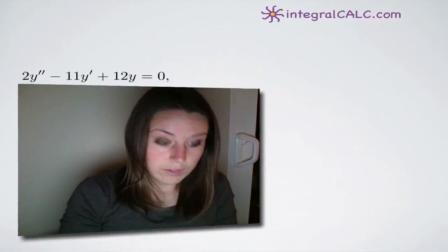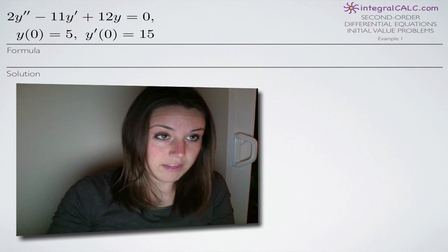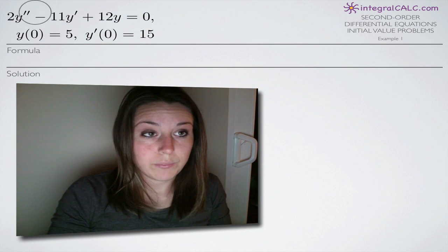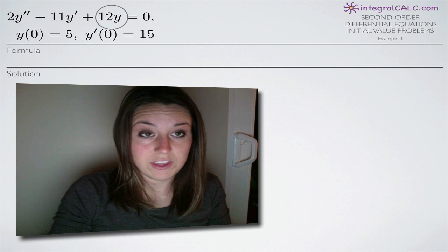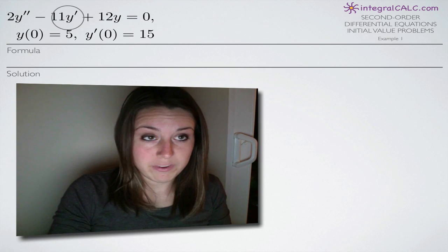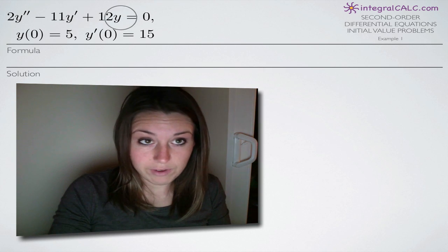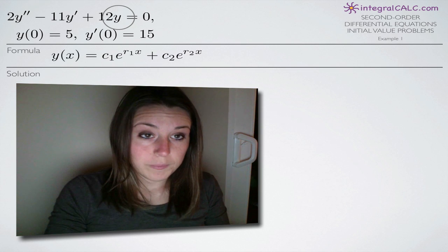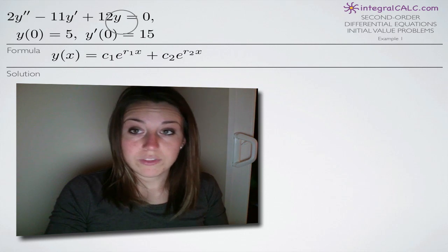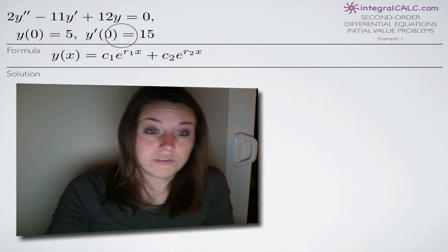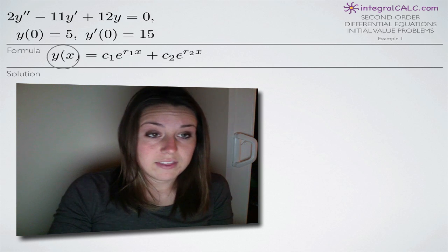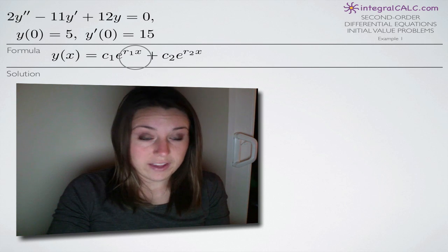Keep in mind that y double prime represents the second derivative of the original equation y, and y prime represents the first derivative. The formula we're going to be using for this problem, as with all second order differential equations problems, is this formula here for y of x.